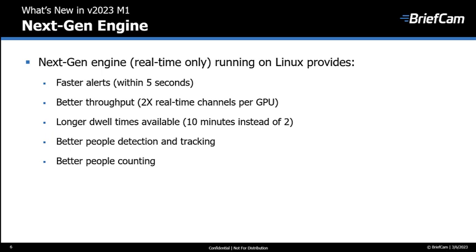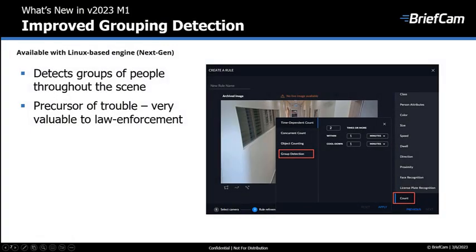With the new engine, you can also define a longer dwell time in the respond dwell filter — up to 10 minutes instead of 2. The engine also has improved people detection and tracking accuracy, and better people counting. If you use this new infrastructure, you'll also be able to receive alerts when a group of a predefined size forms for a certain amount of time. This new group detection helps prevent crowding and allows you to monitor groups for public safety or quality of service.